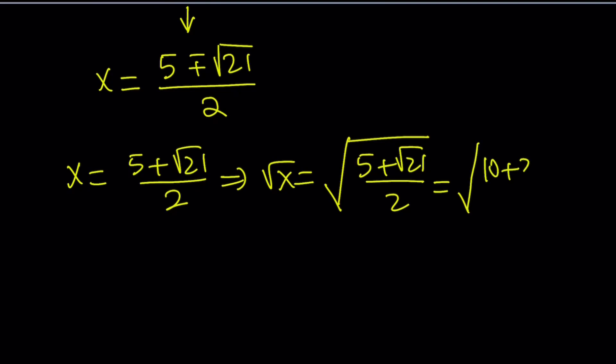That's going to give us the following. One way to simplify this is multiply the top and the bottom by 2 inside the radical. That's going to give us 10 plus 2 root 21 over 4. Obviously, the square root of 4 is 2, so that simplifies.